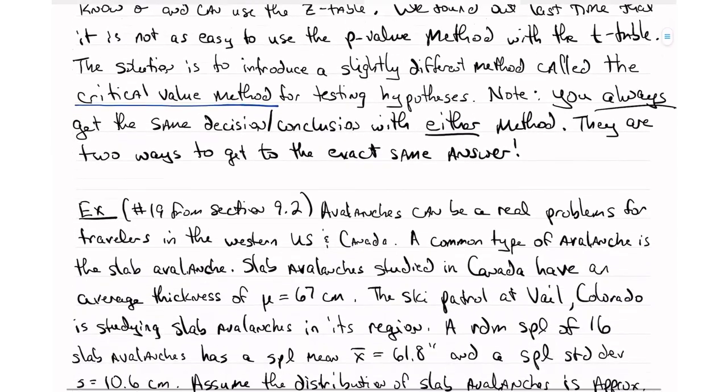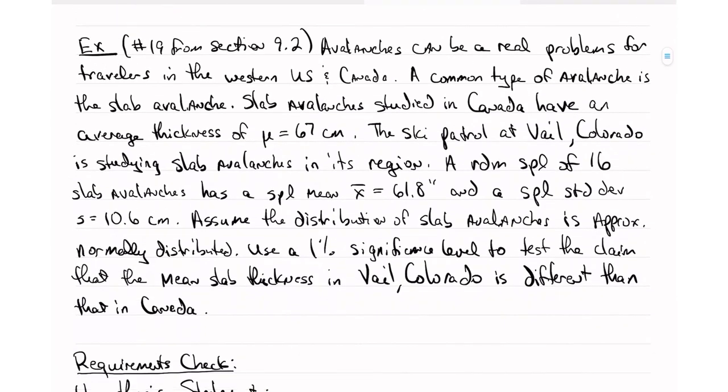So let's just dive in and do an example. I chose number 19 from section 9.2. So this is a very longly worded question. I didn't write it all down, but I will read it from the book. And it says, snow avalanches can be a real problem for travelers in the western U.S. and Canada.